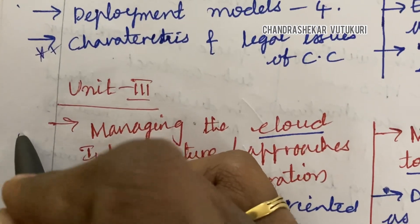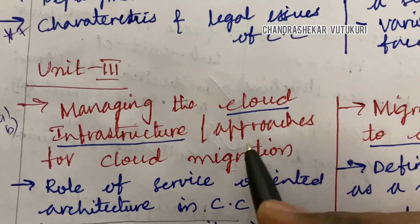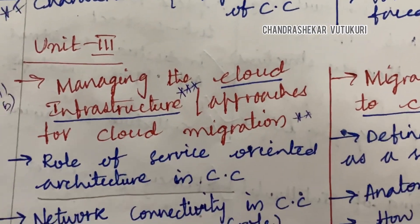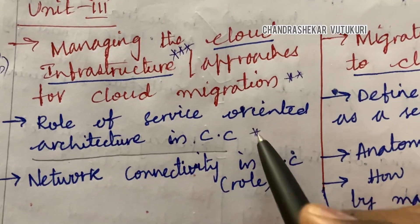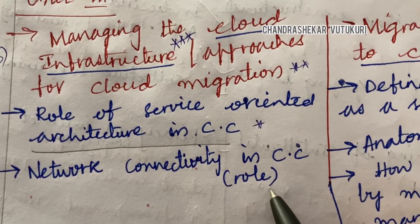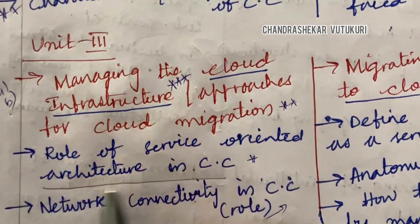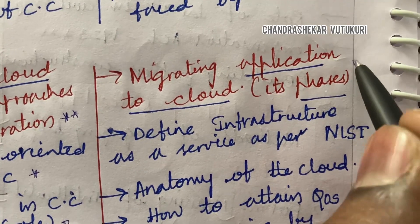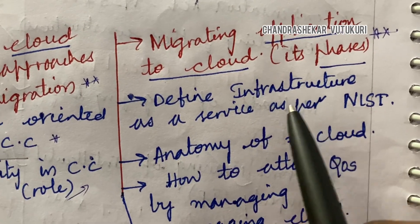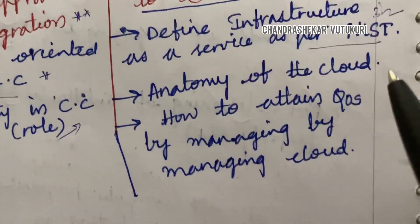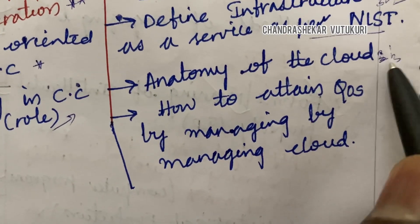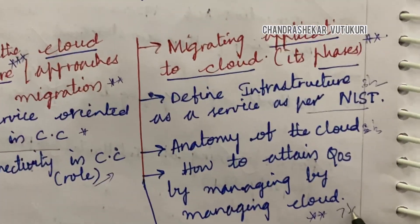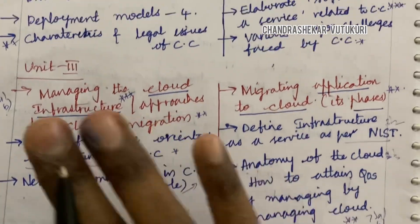Let's look into Unit 3, covering question 6A and 6B. Managing the cloud infrastructure is a topmost question, and the approaches of cloud migration is also a topmost question. Role of Service Oriented Architecture in Cloud Computing, network connectivity in Cloud Computing, and migrating applications to the cloud and its phases are also topmost questions. Define Infrastructure as a Service as per NIST may be a 2 or 3 mark question. Anatomy of the cloud is also a 2 or 3 mark question, and how to attain QoS by managing the cloud is a 7A and 7B question from Unit 3.